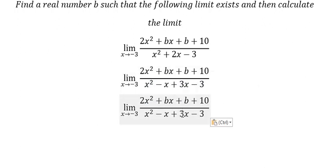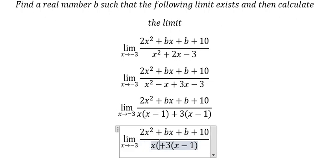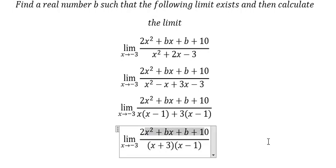Next we can do factorization. The denominator factors as (x+3)(x-1). Now if I put negative three in here, you get zero. That means to make the limit exist, we need to create a factor of (x+3) in the numerator as well.